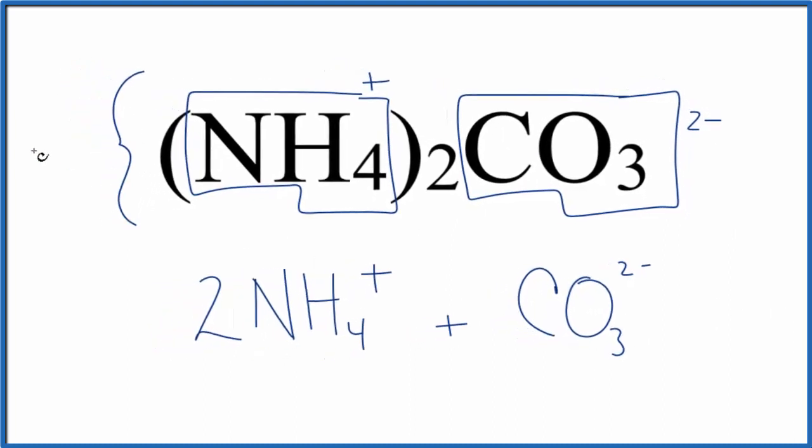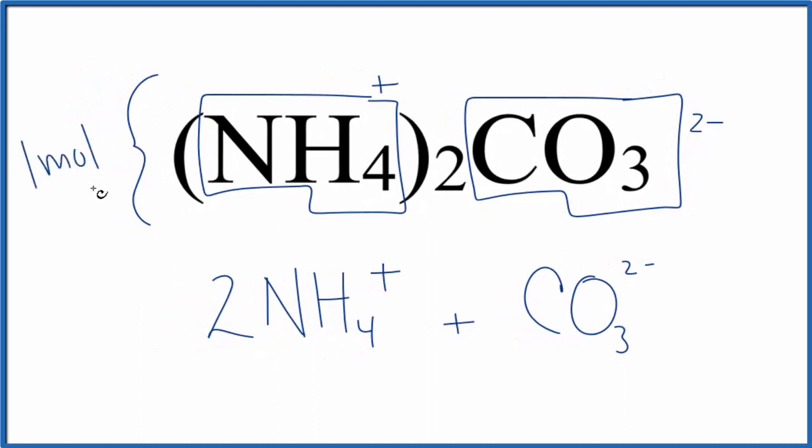What if you were told you had one mole of ammonium carbonate? How many moles of ammonium ions would you have? One mole of this whole compound means you'll have two moles of the ammonium ion, but you'll only have one mole of the carbonate ion.